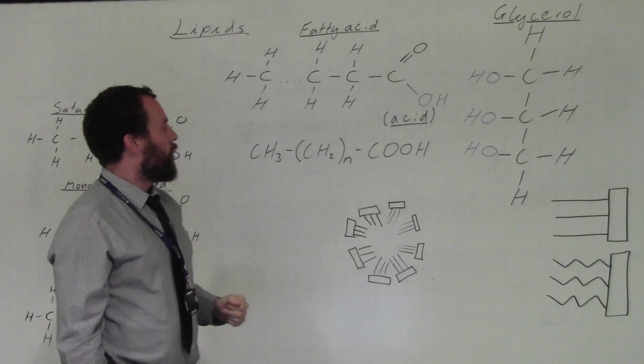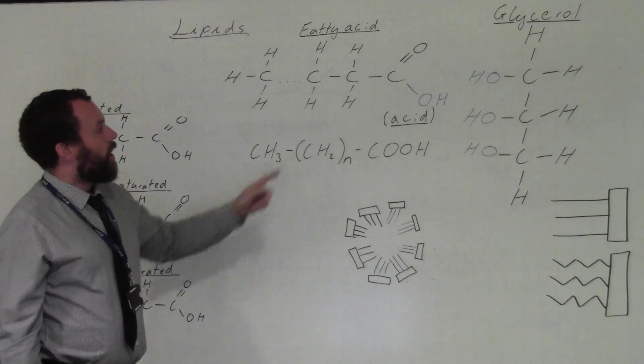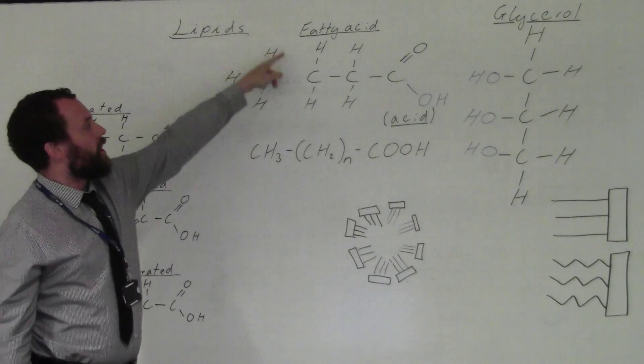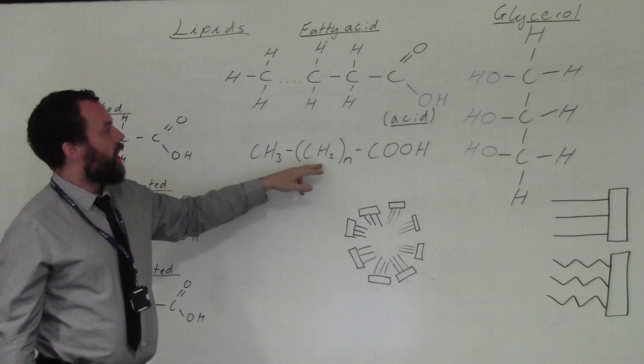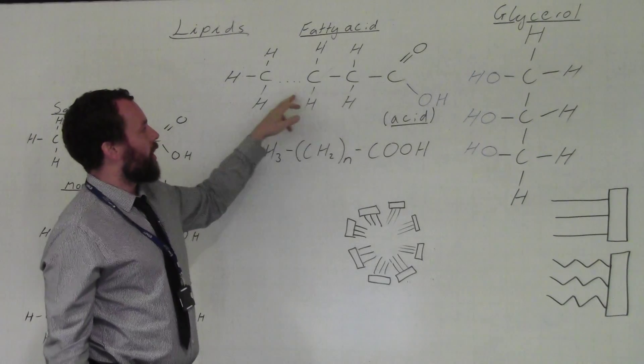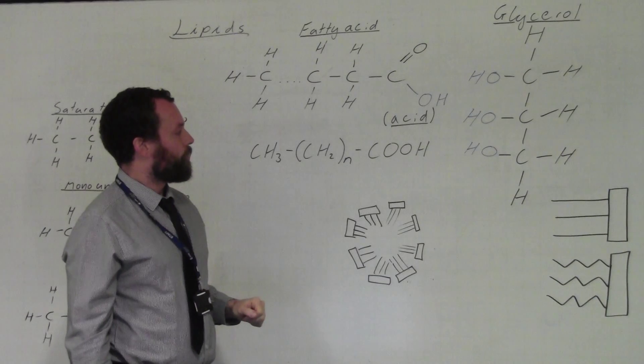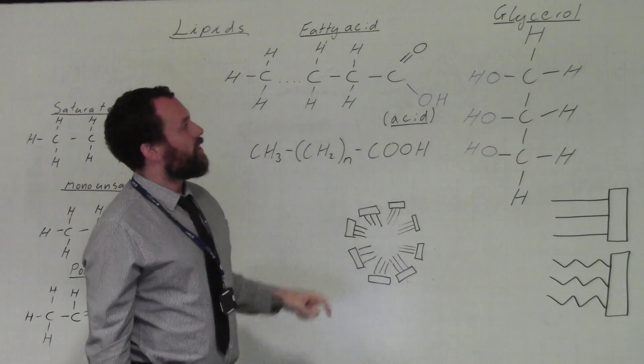Looking at the formula for fatty acids, we can see the CH3 part here, CH2 with the N representing the variable length of the hydrocarbon chain, and then the COO group here. These fatty acids join to...